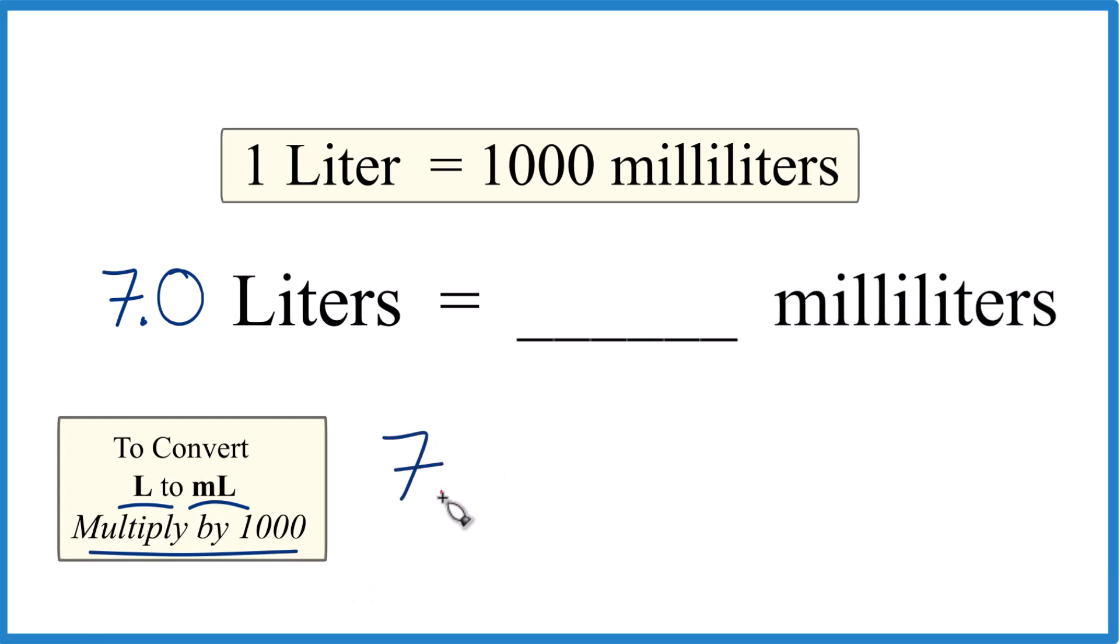So we have our 7.0 liters. We multiply that by 1,000, and that's 1,000 milliliters per liter. And we do the math. We have liters on top and the bottom. They cancel out. We're left with milliliters.